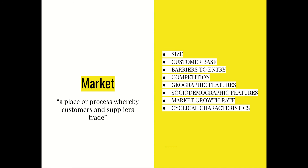Now that we've got the definitional stuff out of the way, when we look at a market there are a range of characteristics we're interested in. Every market will have these characteristics — what they look like for a specific market will vary, but these are the headings, the things you're looking for. The first one obviously is size, and we talked last lesson about how you can measure the size of a market, so I'm going to move on from that right now.